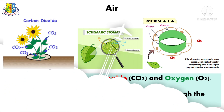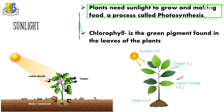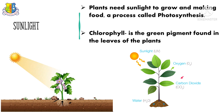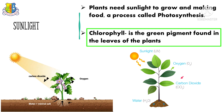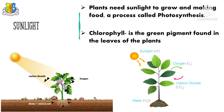Sunlight — plants need sunlight to grow and to make food through a process called photosynthesis. Chlorophyll is the green pigment found in the leaves of plants. Look at these pictures to see how plants make their food.